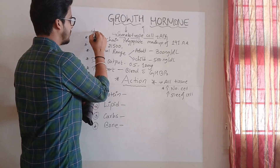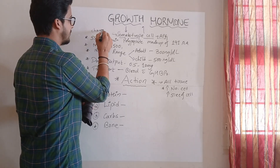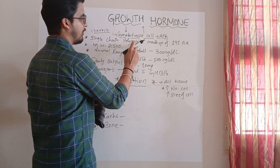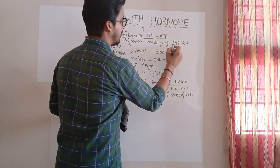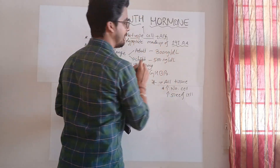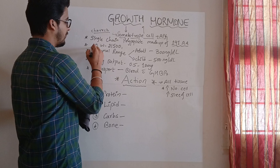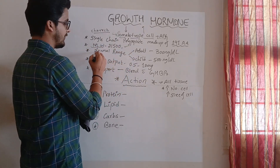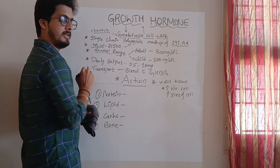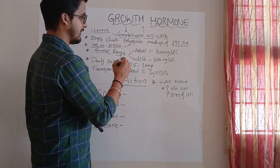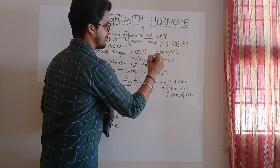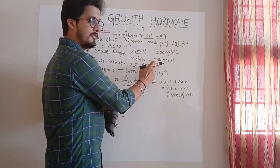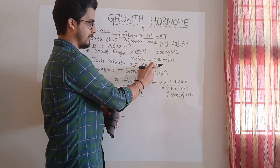What are the characteristics of growth hormone? It is a single chain polypeptide. It is made up of 191 amino acids. Molecular weight is 21,500. The normal range in adults is 300 nanograms per dL, and in children it is 500 nanograms per dL, because children have higher growth hormone levels.